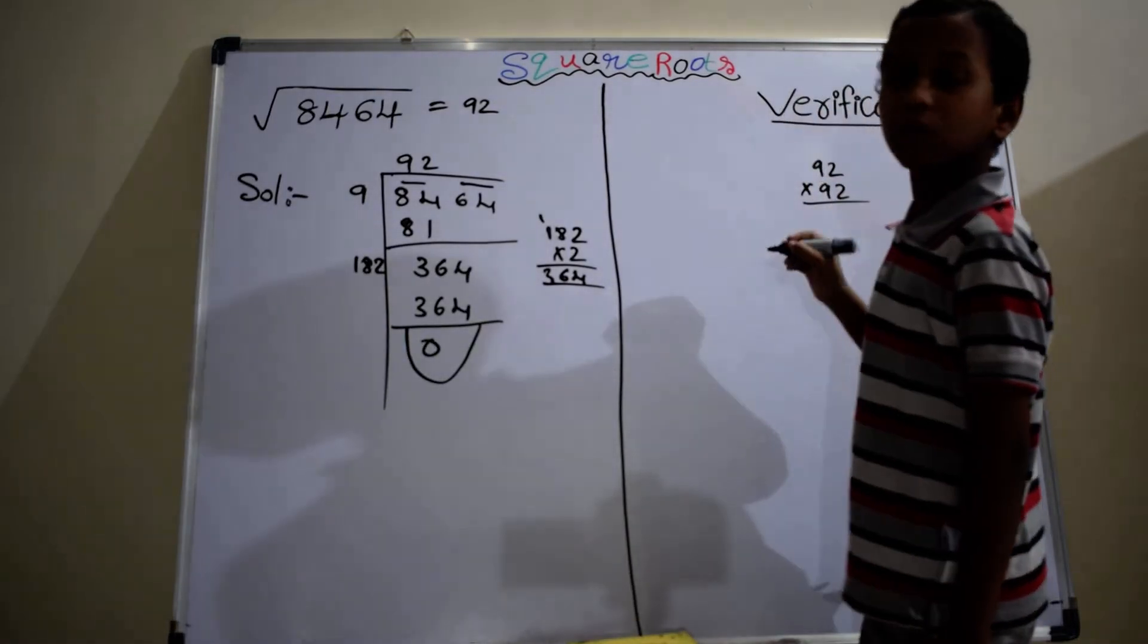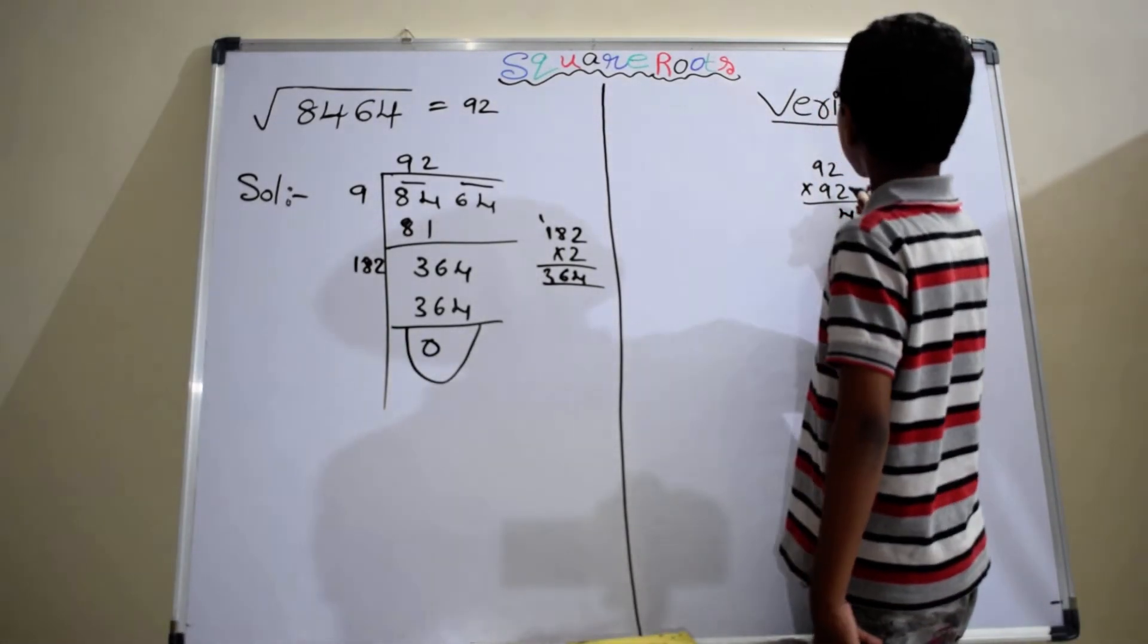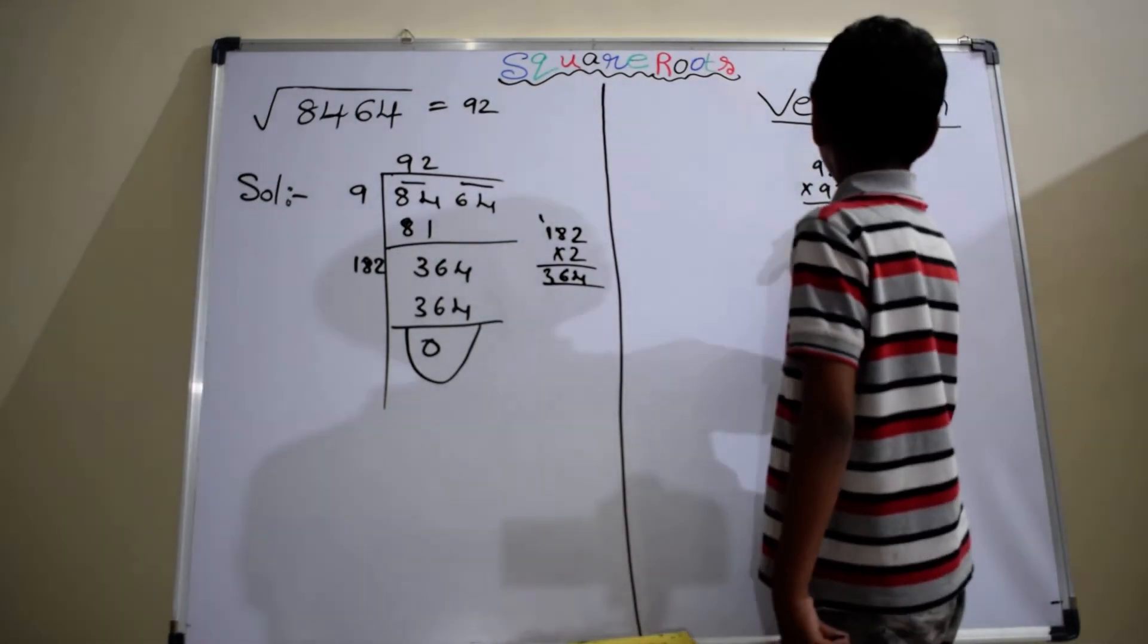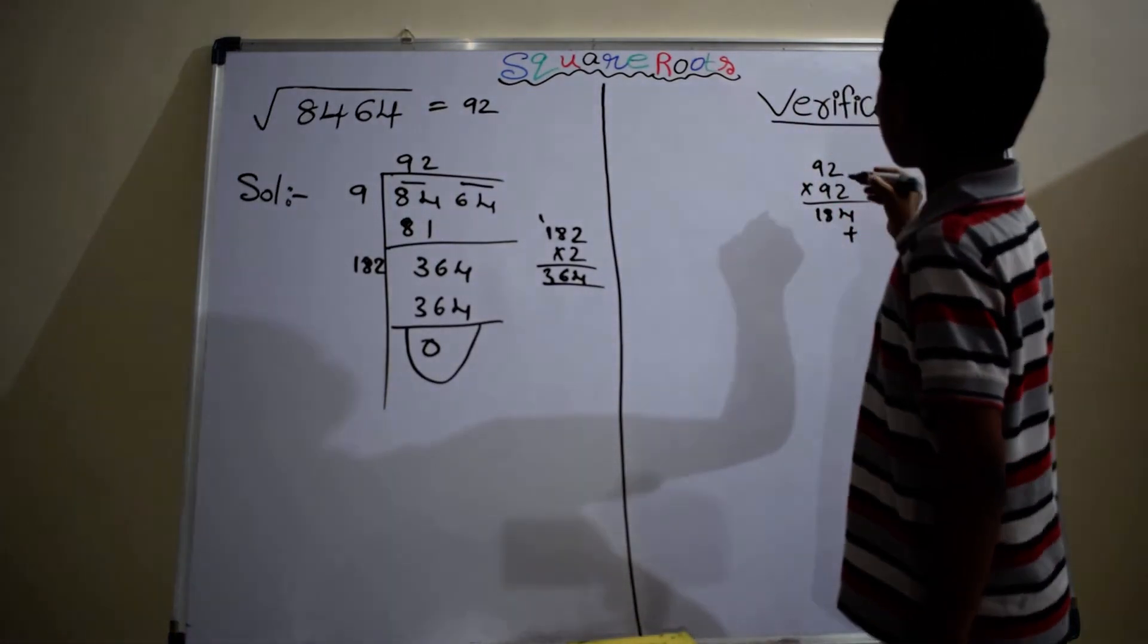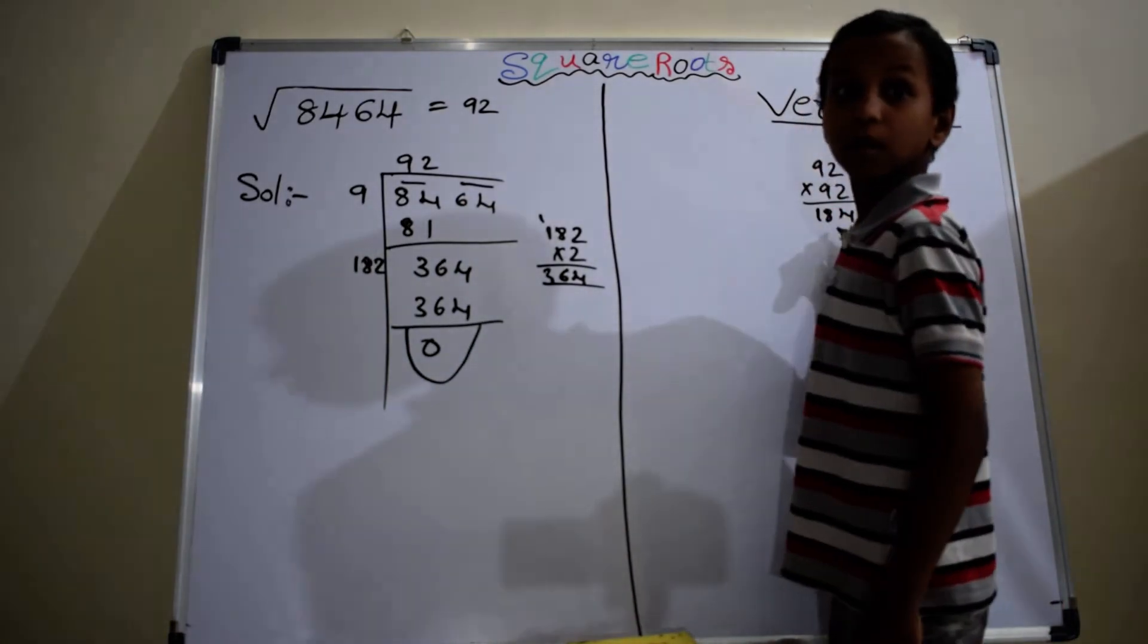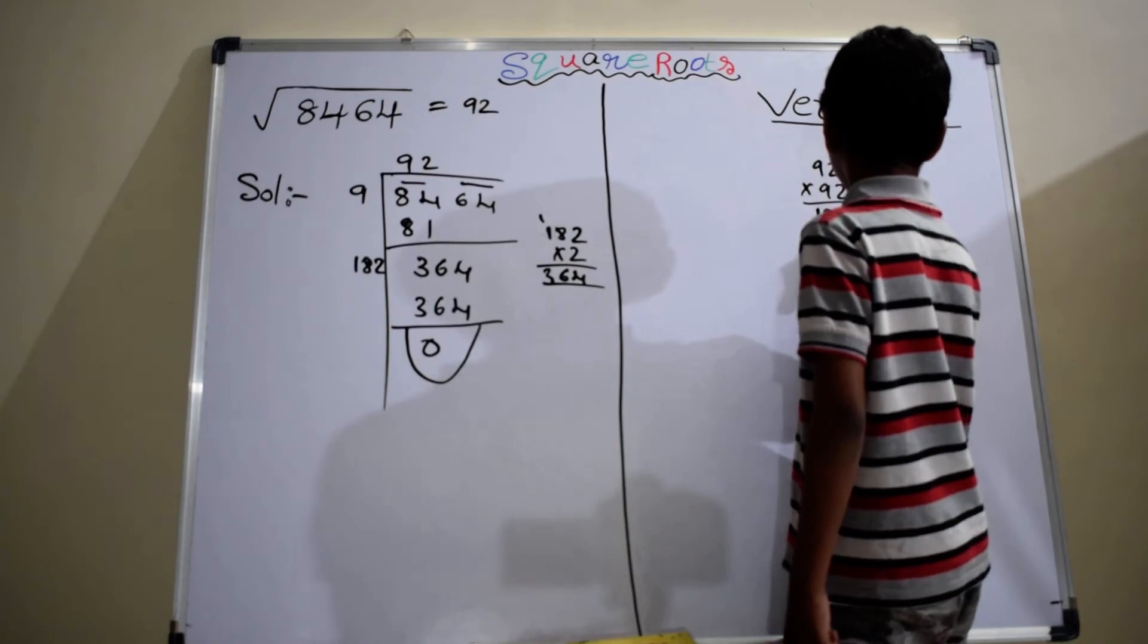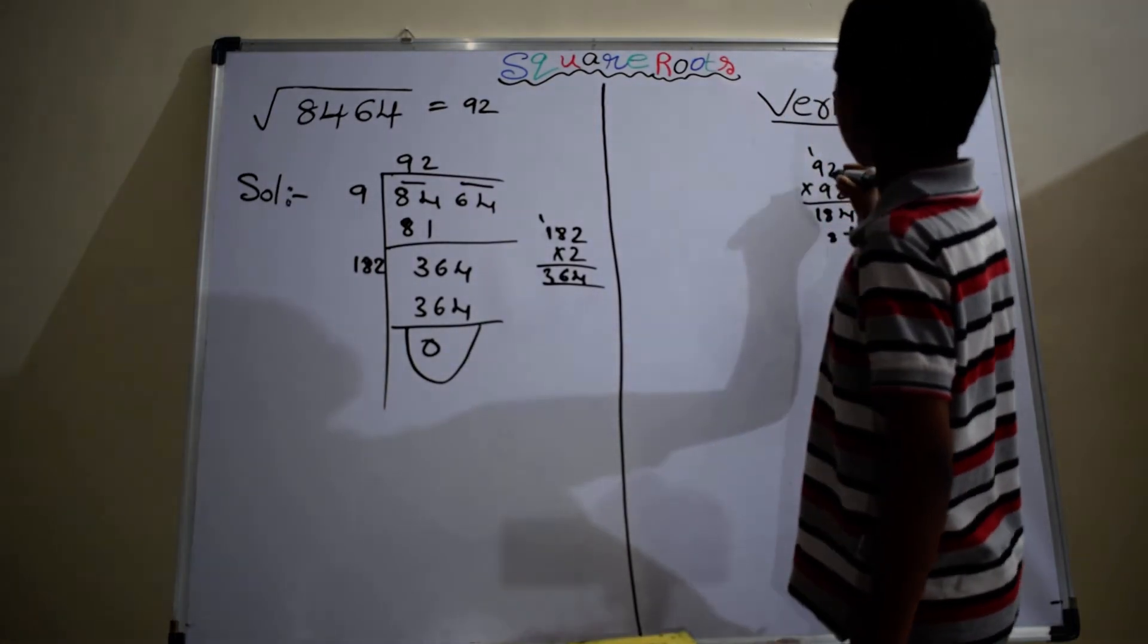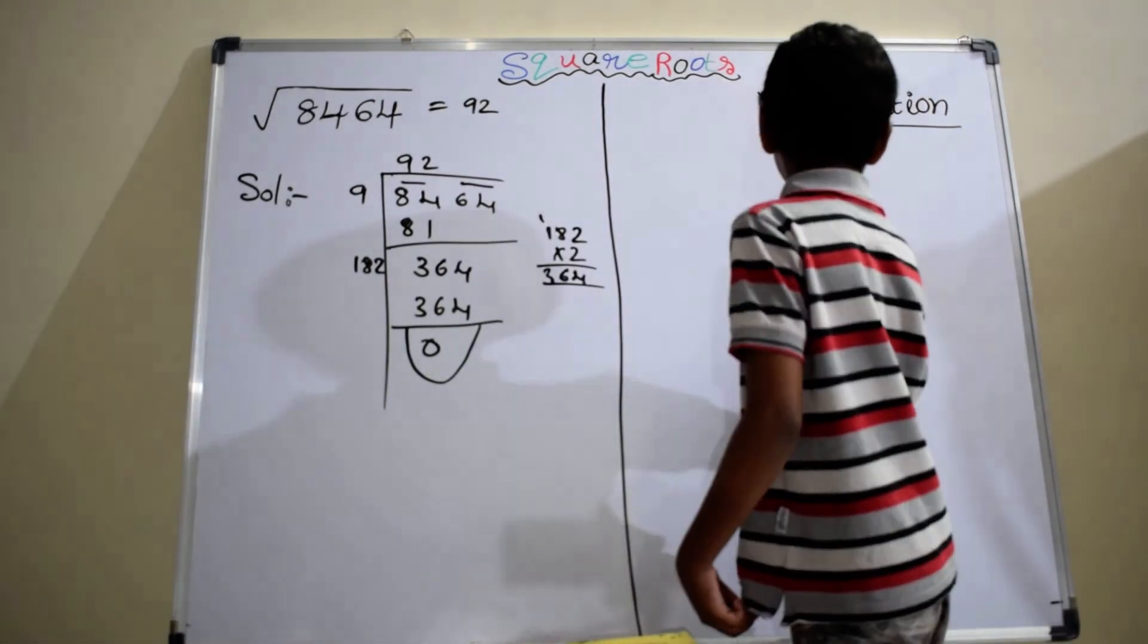2 into 2, 4. 2 into 9, 18. 9 into 2, 18. 81 plus 1, 82.